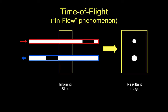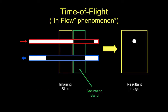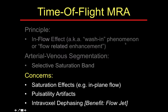If you apply a saturation band to the left of the imaging slice, you will saturate the spins coming in from the left such that you only see the spins coming from the right-hand side, generating that bright signal. Alternatively, if you put the saturation band on the right-hand side, you will suppress the flow coming from the right, thus selectively visualizing the flow within the vessel on the top. There are a number of artifacts or concerns related to time-of-flight imaging.